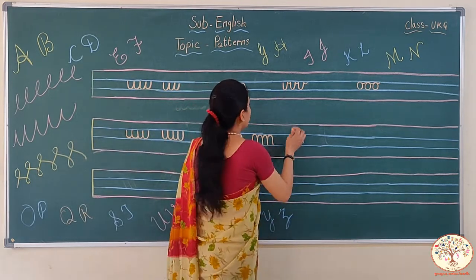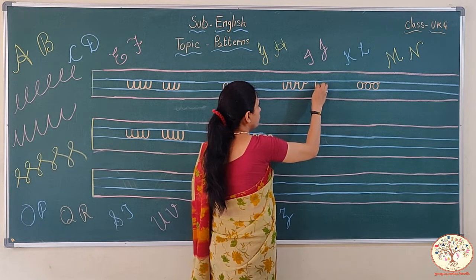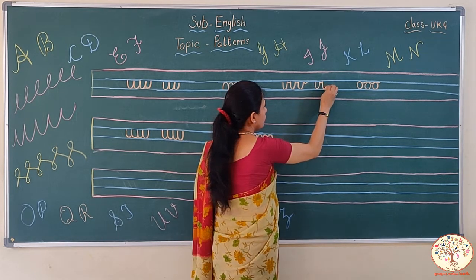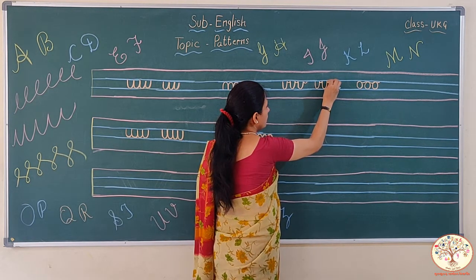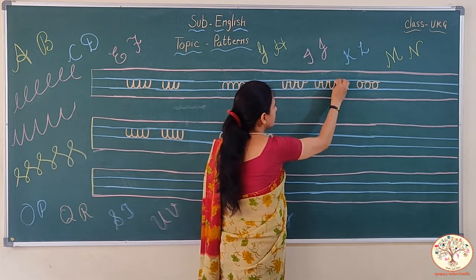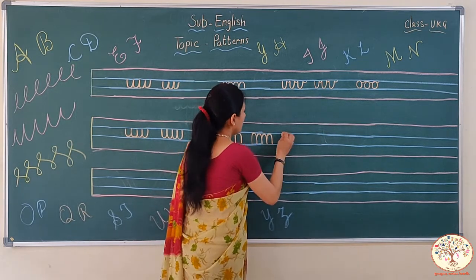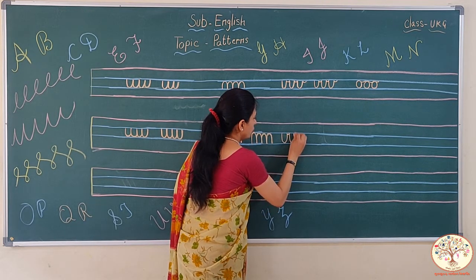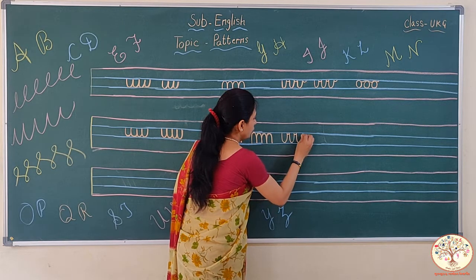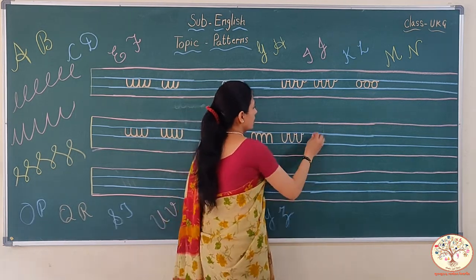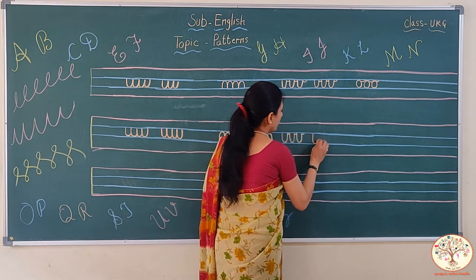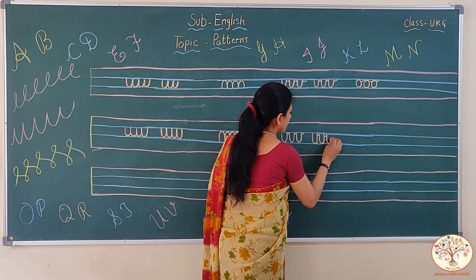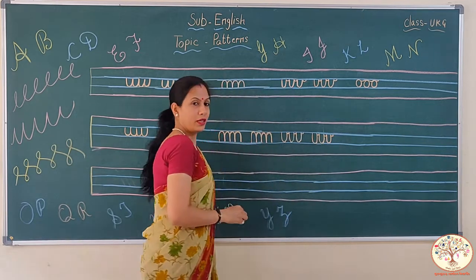And this pattern — we will make U and then a small curve, again U and a small turn, U and a small turn. These are small patterns between the middle two lines. U, curve, U, small curve.